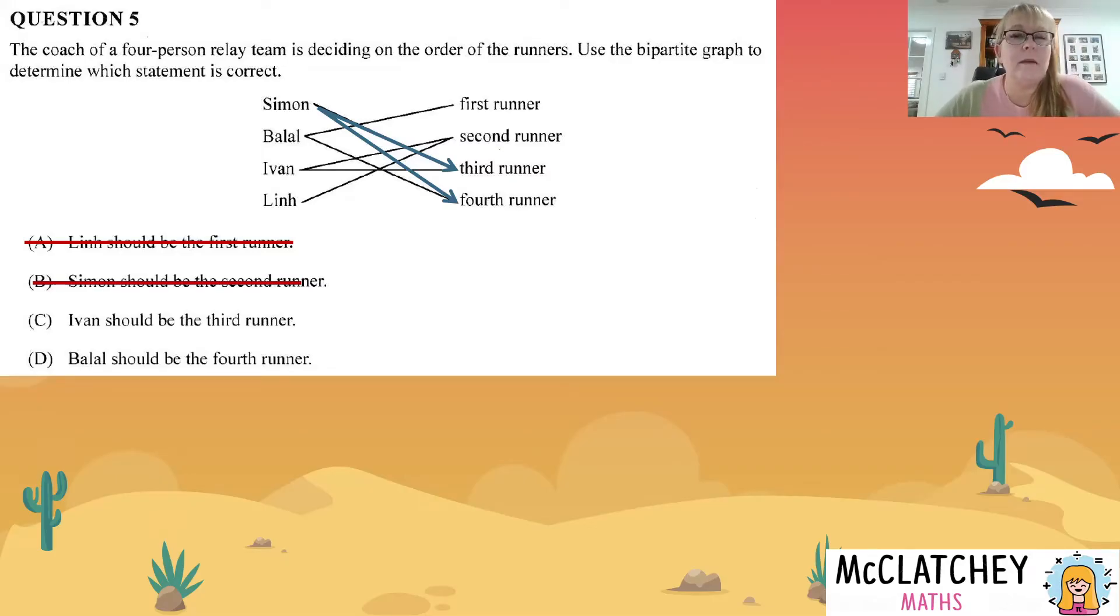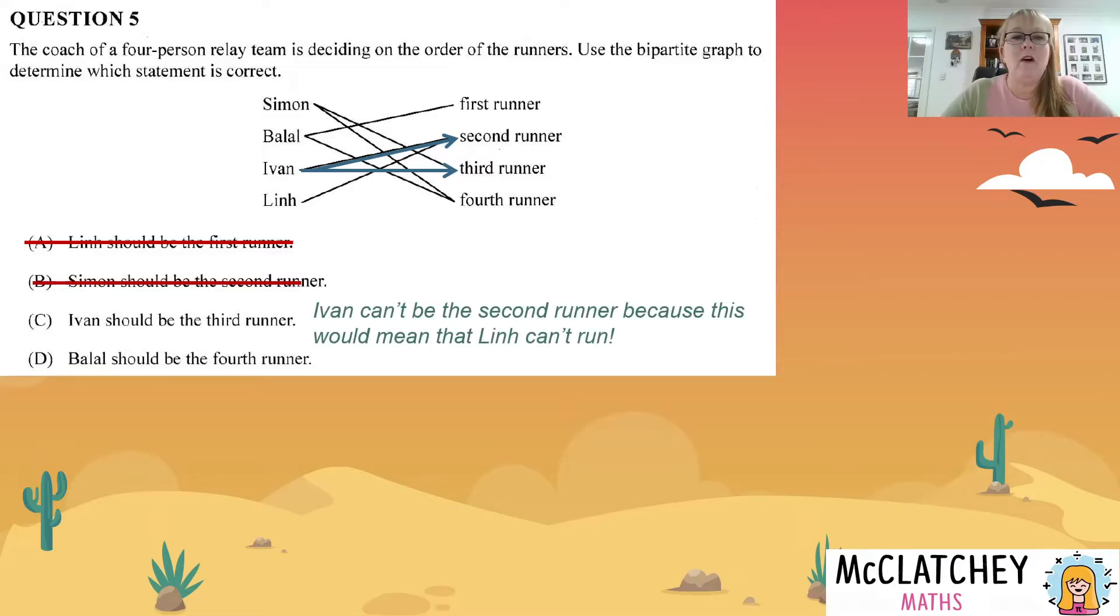Let's look at option C. Ivan should be the third runner. So let's look at Ivan's options. He's got two options, the second runner or the third runner. So that's at least this time we've got a possibility. Ivan C could be correct, but we need to think a little bit further because what happens if we make Ivan the second runner? Well, that means that Lynn has no position in the relay team. So Lynn must be the second runner. She's the only one that could be the second runner because that's the only option for Lynn. So if that's the case, then Ivan can't be second. So he must be the third runner, which means that C is correct. So we can circle C.